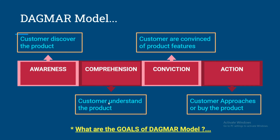Then we have Comprehension. In this stage, the customer understands the product — meaning its properties, price, main characteristics, etc. of the product or services. Then we have Conviction, where the customer is convinced by the product, or we can say the product's characteristics meet all the desired requirements which a consumer was searching for.